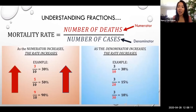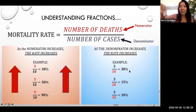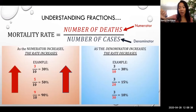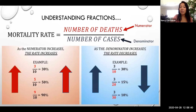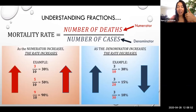How about the denominator — the number of cases? As you can see, if I have the same fraction 3 over 10, I get 30%. If I increase the denominator to 3 over 20, I get 15% — dropped from 30 to 15. Increase the denominator to 3 out of 30, I get 10%. So I went from 30 to 15 to 10 — it's dropped. As the denominator increases, the rate decreases. In other words, as the number of cases increases, the mortality rate decreases.